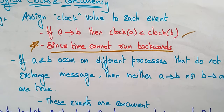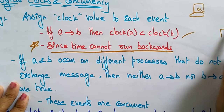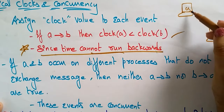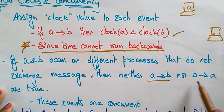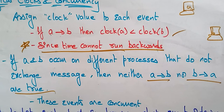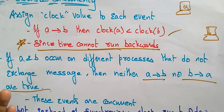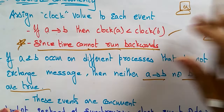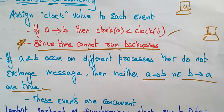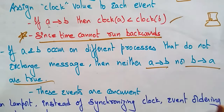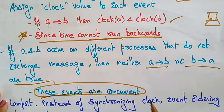If A and B occur on different processes — A in one system and B in another system — or in the same systems but different processes that do not exchange messages, then neither A Lamport B nor B Lamport A is true. Both are not true because if there is no network then there is no concept of synchronization or checking logical clocks. Every system is independent. If there is no connection between them, there is no need to bother about which event comes next. These events are called concurrent.